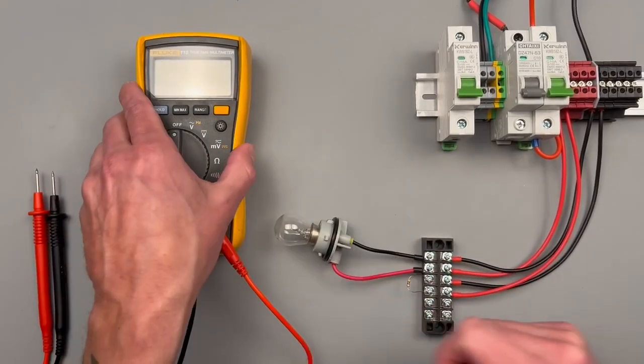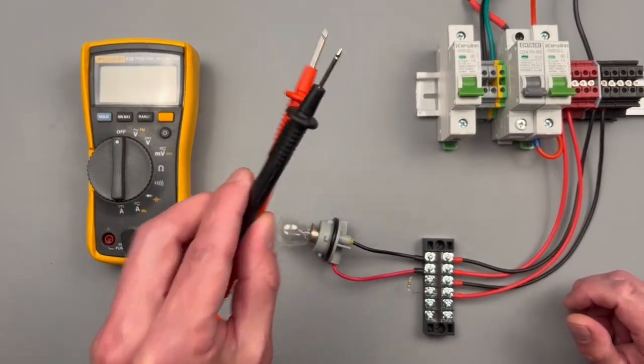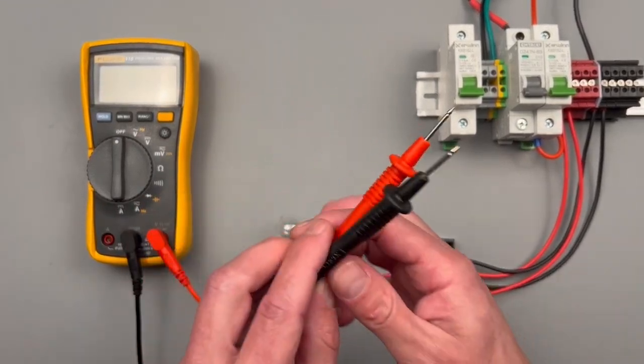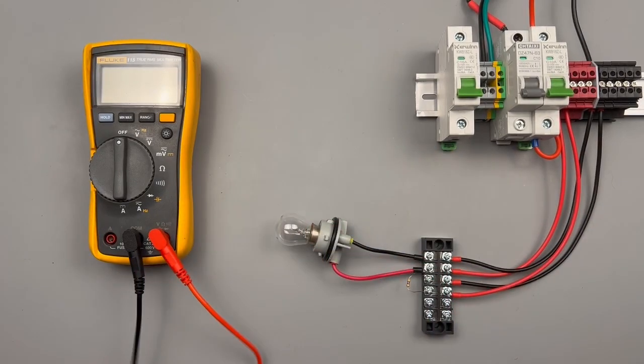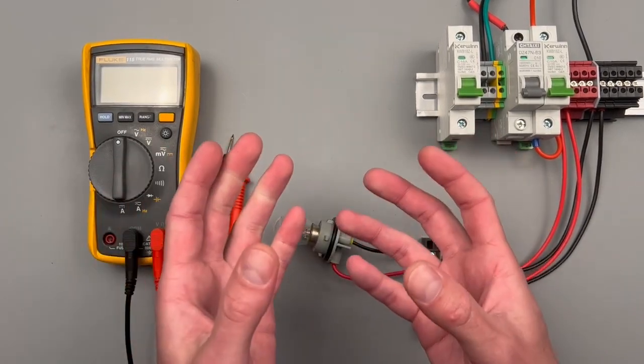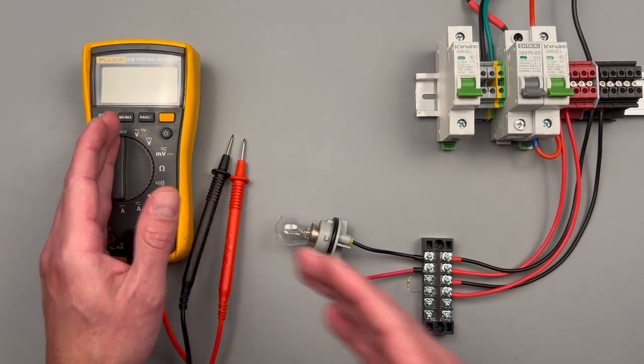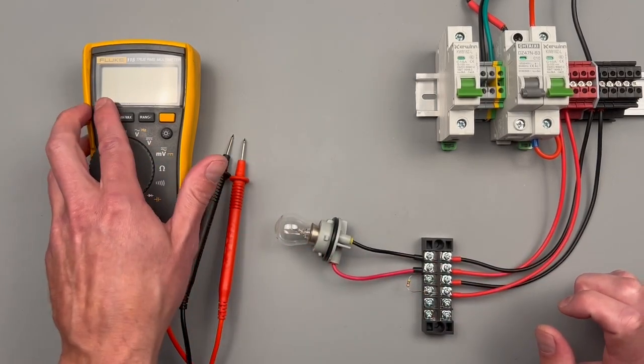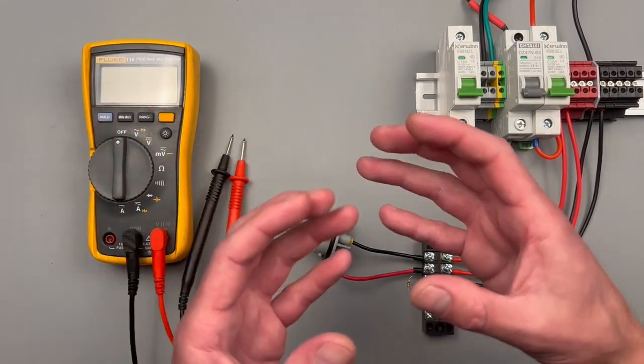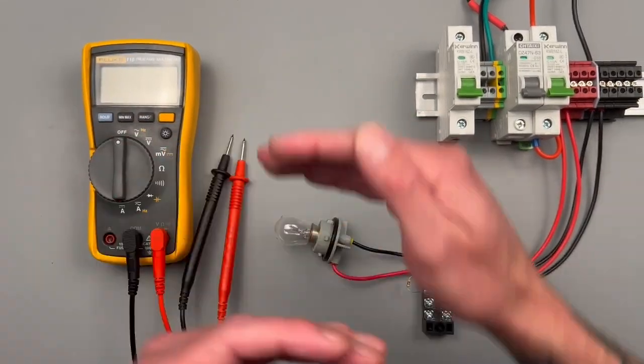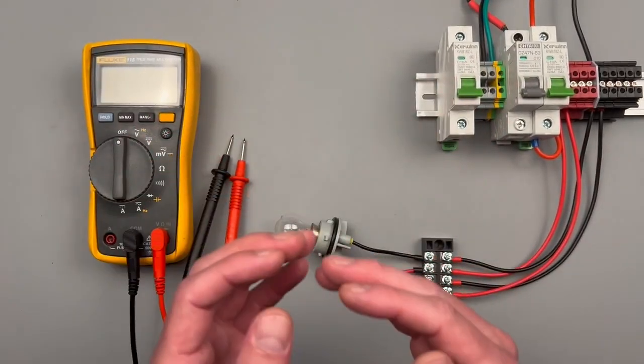Another thing that we need to keep in mind when we're measuring direct current is our lead polarity. That means your black and red lead, it's going to matter which one you use it for, or your measurement may not come back properly. It could tell your meter it's out of range, or the most likely case, it'll simply just have a negative sign displayed on the meter telling you that the polarity that you're using is reversed from what it should be, either because the circuit's been reversed or because your leads are reversed.